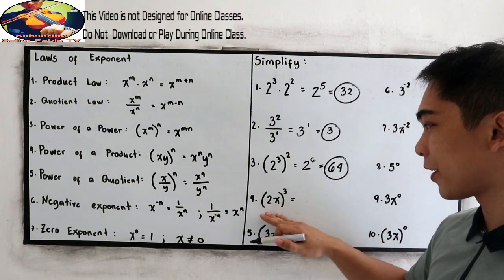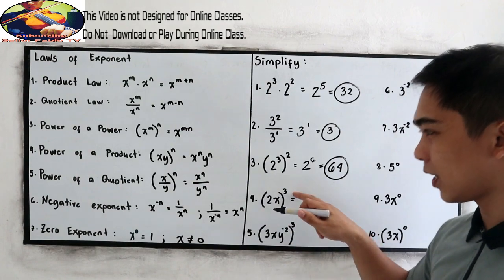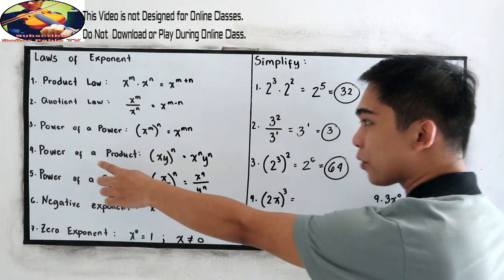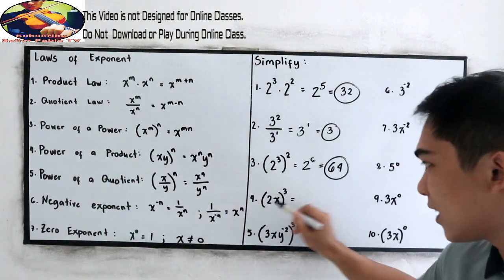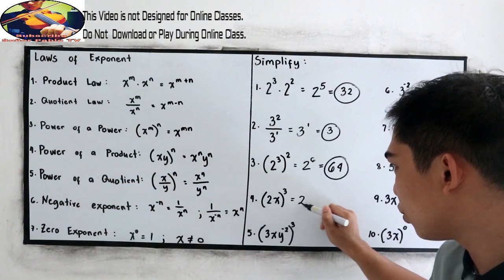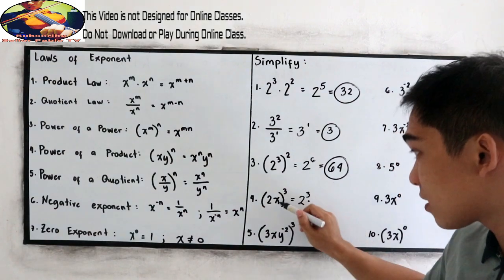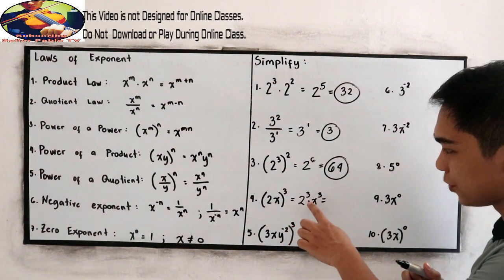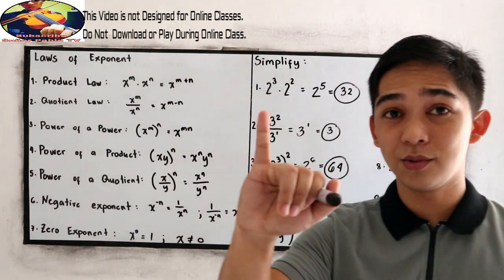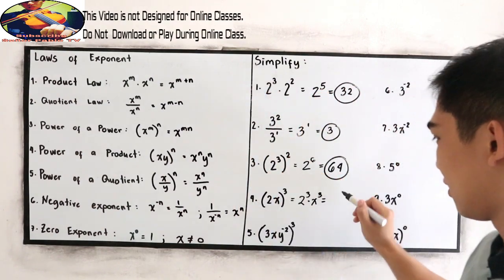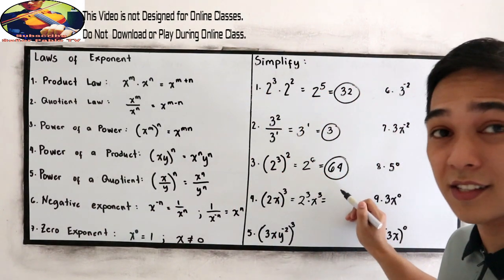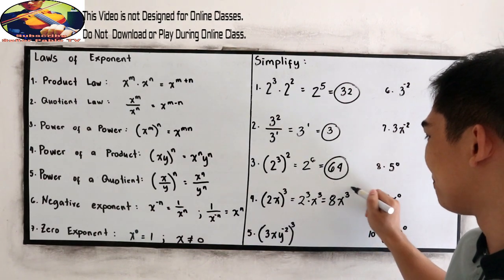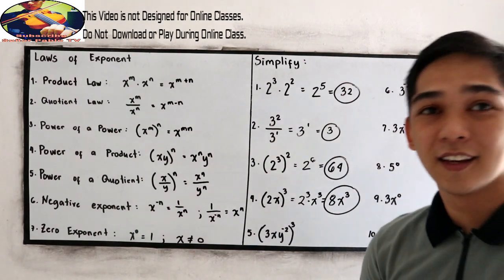Number 4: quantity 2x raised to 3. We apply law number 4, power of a product. This equals 2 cubed times x cubed. We simplify 2 cubed: 2 times 2 times 2 equals 8. So the answer is 8x cubed.